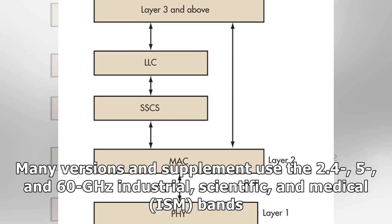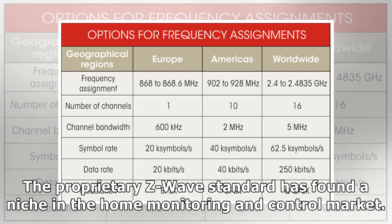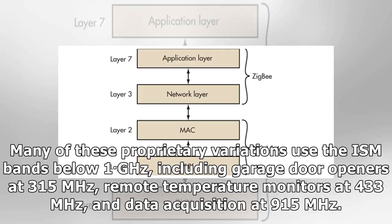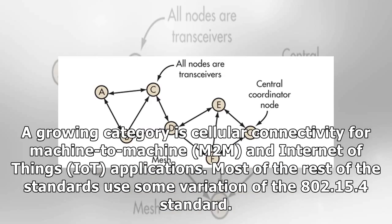Many versions use the 2.4, 5, and 60 GHz ISM bands. The proprietary Z-Wave standard has found a niche in the home monitoring and control market. There are other proprietary standards for specific applications, such as Wireless HD for 60 GHz video transfer. Many proprietary variations use bands below 1 GHz, including garage door openers at 315 MHz, remote temperature monitors at 433 MHz, and data acquisition at 915 MHz.